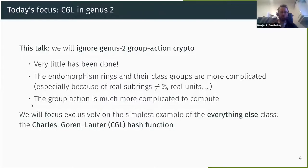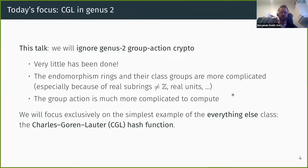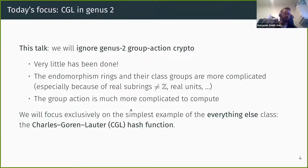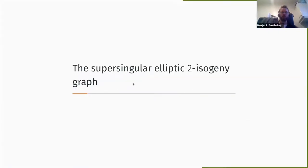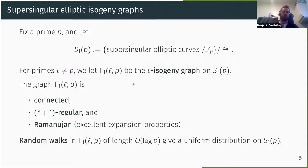So what we're going to do is focus exclusively on the very simplest example — the Charles-Goren-Lauter hash function. It's simplest in the sense that there are very few moving parts; we don't have to think about things like public keys and private keys. It's a public function that is still potentially very useful in cryptography. This is a hash function based on walks in a certain supersingular isogeny graph.